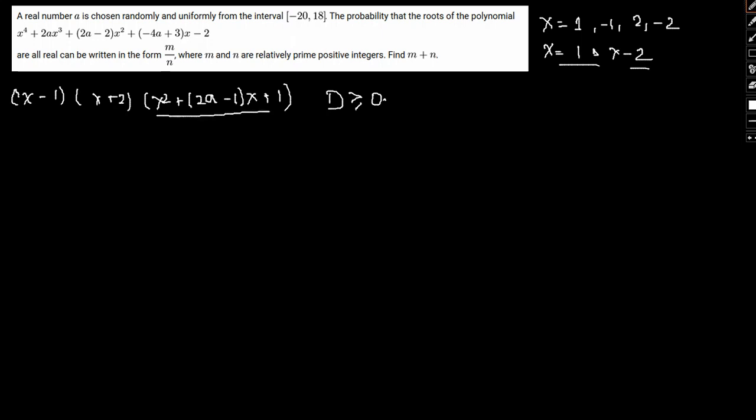So here if we are looking to find d, so d will be equal to b squared minus 4ac which should be greater than or equal to 0. So we can write b squared is 2a minus 1 squared minus 4 times 1 times 1, so 4 should be greater than or equal to 0.